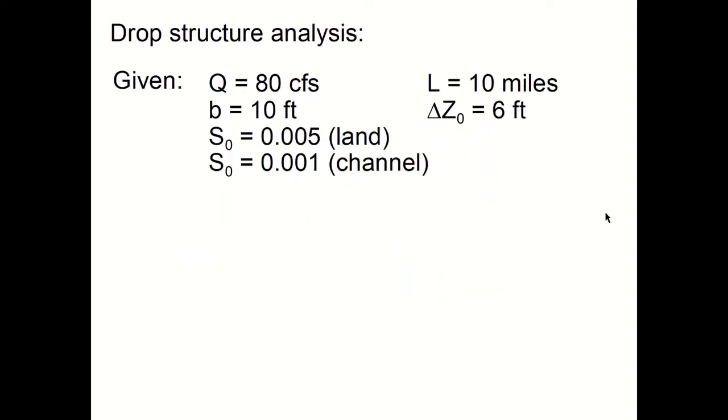The known information in terms of our standard variables: Q equals 80 CFS, B equals 10 feet (that refers to the drop structure), the slope of the land is 0.005, the slope of the channel is 0.001, the length of the channel will be 10 miles, and the vertical drop for each drop structure will be 6 feet.